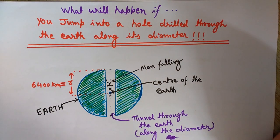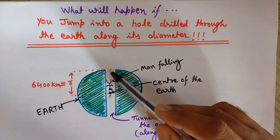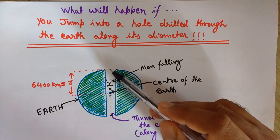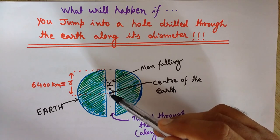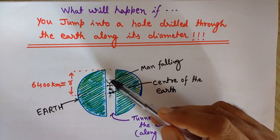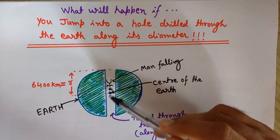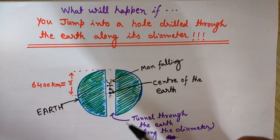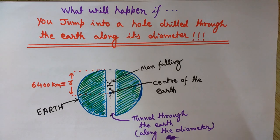It's important to note that we are not considering air drag — no air resistance is present in the tunnel. In this case, oscillations continue endlessly. But if air is present, the air drag will resist the motion. The man will reach the center with maximum velocity but will not reach the other end. The oscillation amplitude will decrease over time and he will ultimately stop at the center.